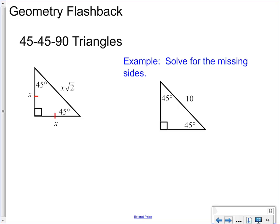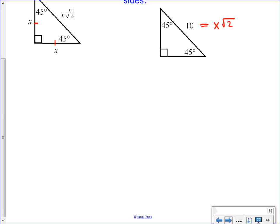In this one, that 10, is that a leg or a hypotenuse? It's a hypotenuse. So that 10 matches up to the expression x root 2. That's an equation. If you were to solve this equation, if we have 10 is equal to x root 2, how do you get the x by itself? Just divide.